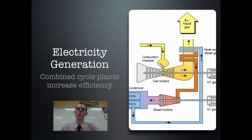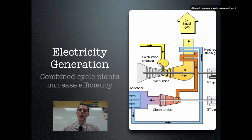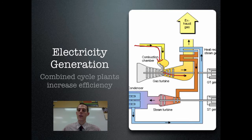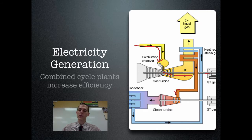There are some plants called combined cycle plants that increase efficiency by using two different processes to make electricity. In this case using natural gas: natural gas comes into the combustion chamber and is burned. The vapor from the burning gas is used to spin one turbine, which spins one generator.